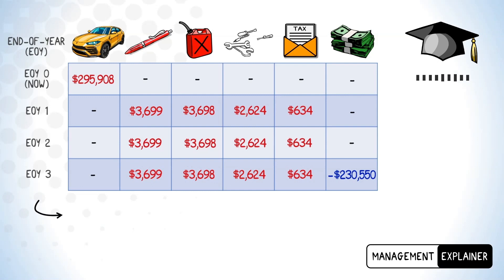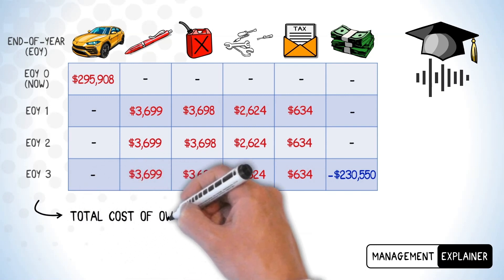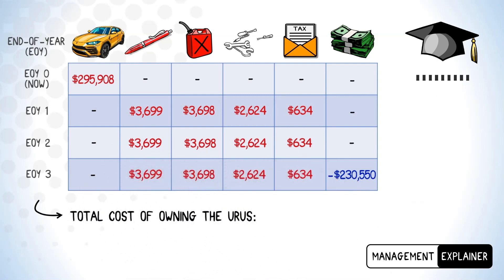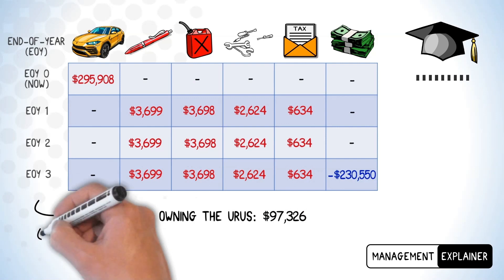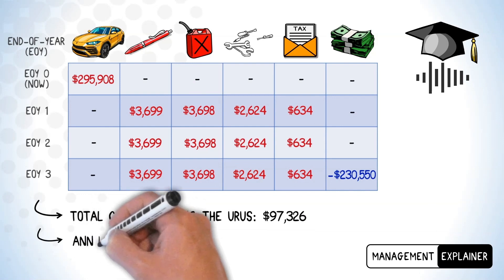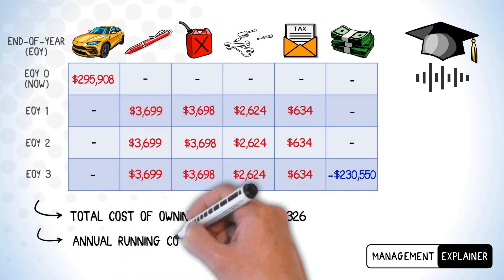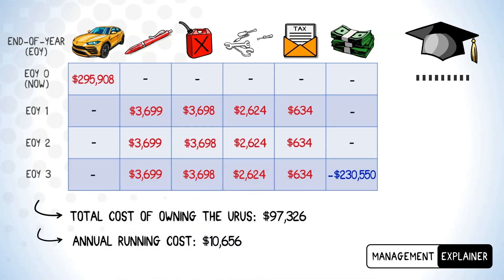If we sum all of the values shown in the table up, we get an estimate of the total cost of owning the Urus at $97,326. Note that the cash we get from selling the car is already subtracted from this sum. But this analysis also tells us about the annual running costs of the Urus: they are $10,656. On a monthly basis we'd have to spend approximately $890 in pure running costs, which is very high.